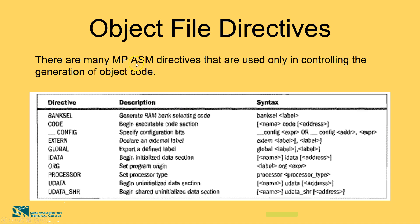Next we have object file directives. These are microchip assembler directives used only to control the generation of object code. We will be using BANKSEC quite often, and ORG occasionally. BANKSEC generates the RAM bank-selecting code — the syntax is BANKSEC followed by the label. ORG sets the program origin — the syntax is the label, then ORG, then the expression. You can go through all of these and see different examples to understand how to use them in your own code.